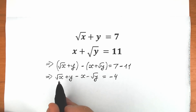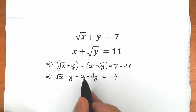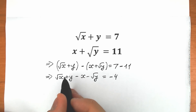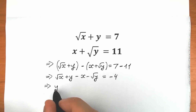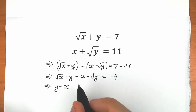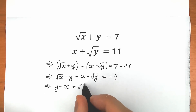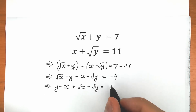Now let's group our terms: square roots together and non-root terms together. We have y minus x, plus square root of x minus square root of y, equal to minus 4.